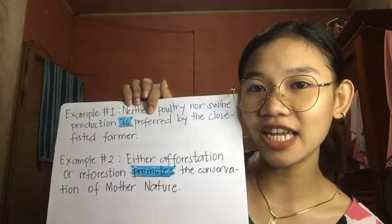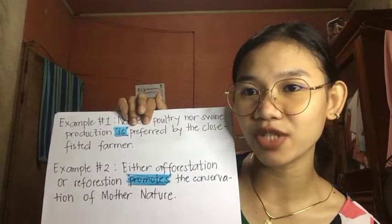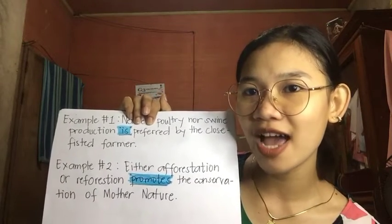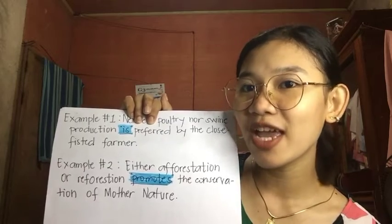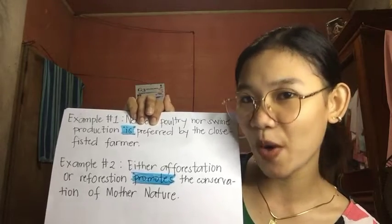Rule number two is the same as rule number one, where two singular subjects connected by either/or or neither/nor require a singular verb. We have a linking verb 'is' on the first example because we are dealing with a singular subject. On the second example, we have the singular verb 'promotes,' which has an S added in the present tense of the word promote.